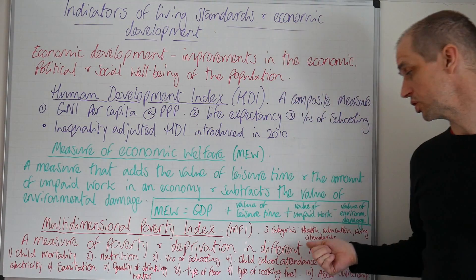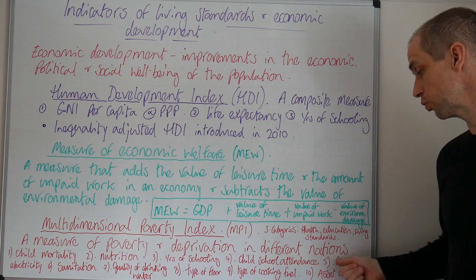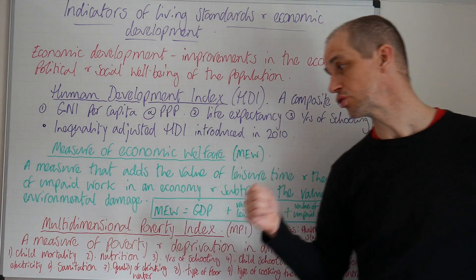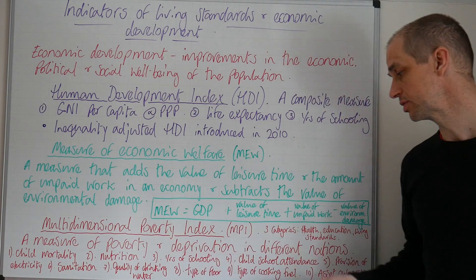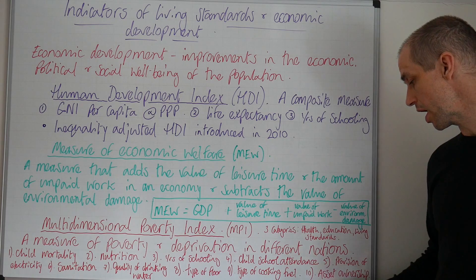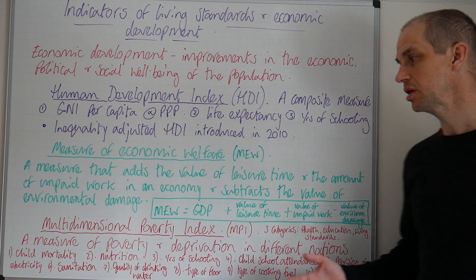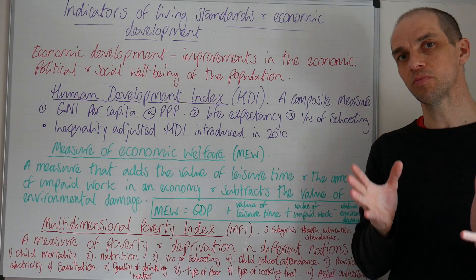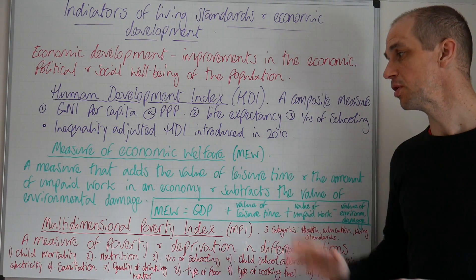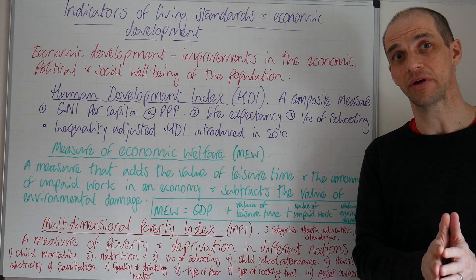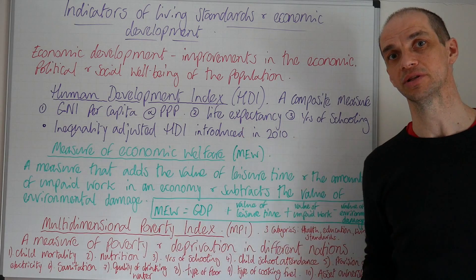The first indicator, under the health banner, is child mortality, and we also see nutrition. Moving on to education: years of schooling and child school attendance. Then under living standards: provision of electricity, sanitation, quality of drinking water, type of floor used in homes across the country, and the type of cooking fuel. Finally, how much of the population actually owns assets and of what sort of value. This is very broad and some of it will be quite problematic in terms of actual calculation, but it gives us a very interesting means of determining which countries have the worst conditions and subsequently the most improvements in terms of economic development.